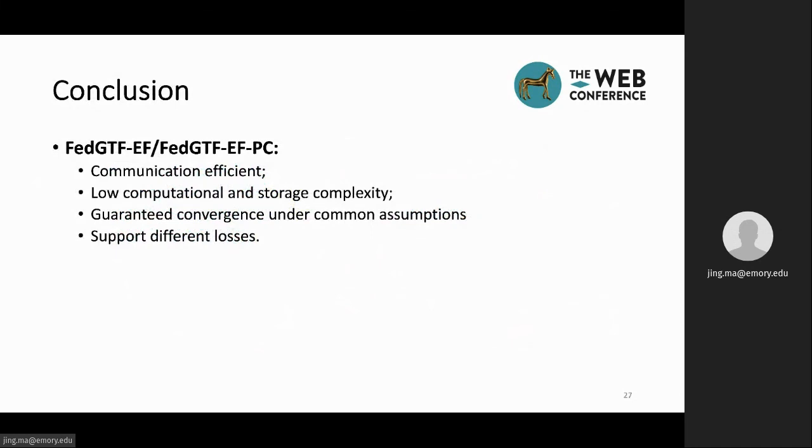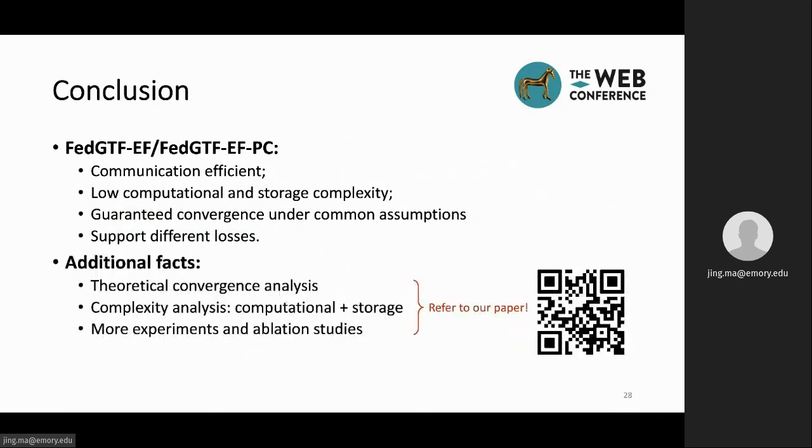In summary, we propose federated tensor factorization algorithms for computational phenotyping with four main advantages, including low communication costs, low computation and storage costs, guaranteed convergence under common assumptions, and we support different loss functions. Moreover, our paper also provides theoretical convergence analysis and complexity analysis, including the computation and storage complexities. There are also comprehensive experiment studies, including the ablation study. Please refer to our paper to find out more if you are interested. Thank you for listening.